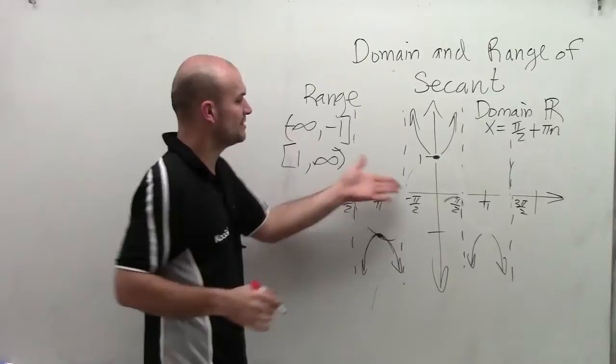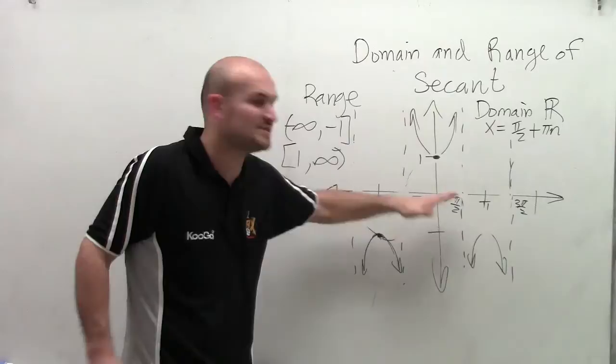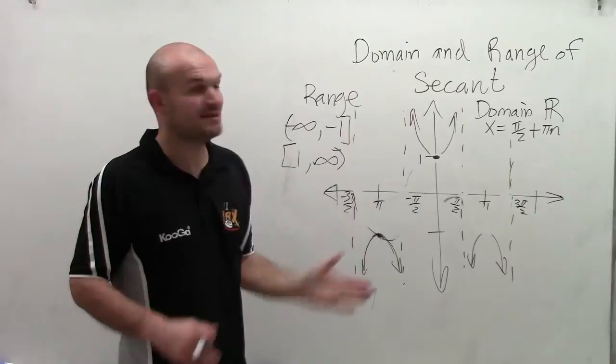Therefore, our range is from negative infinity to negative 1. Then there's nothing in our graph between negative 1 and 1. And then it starts back up at 1 to infinity. So there it goes, ladies and gentlemen. That's your domain and range of the secant function. Thanks.